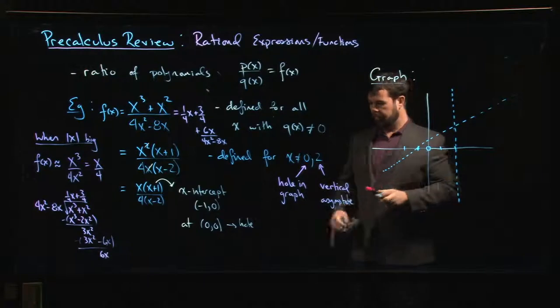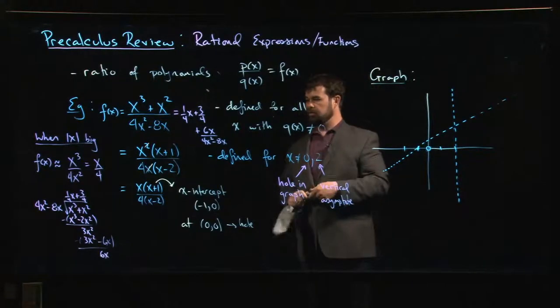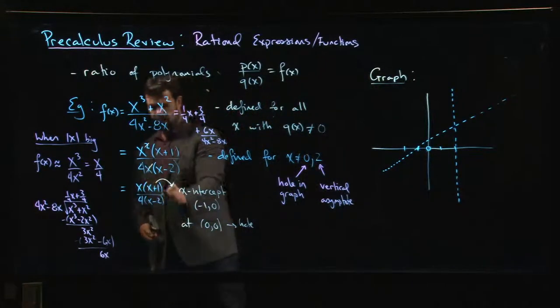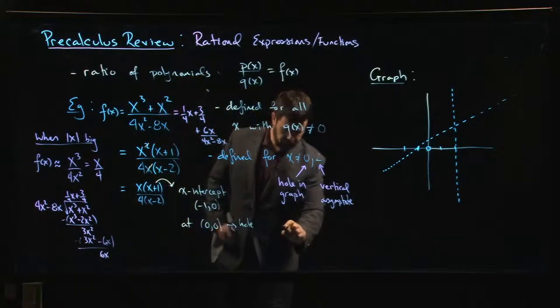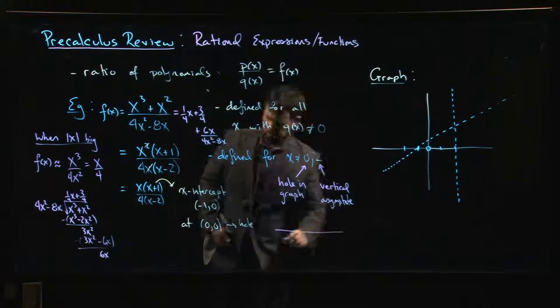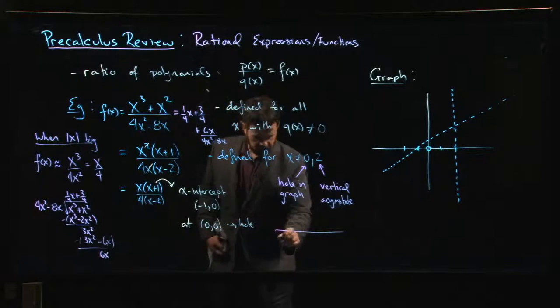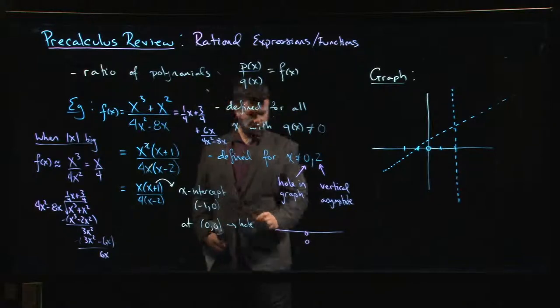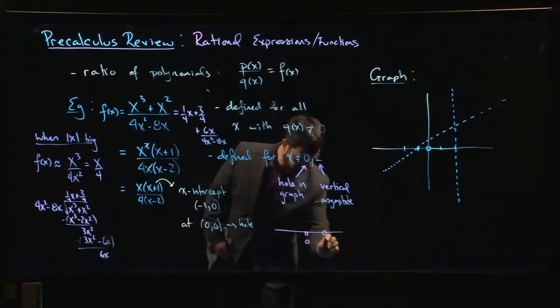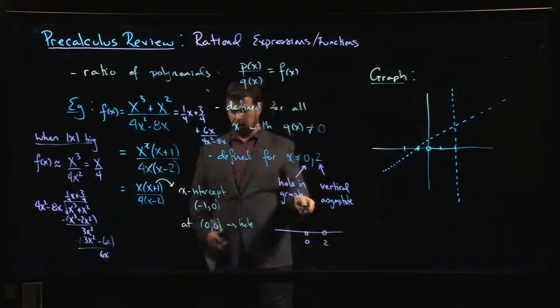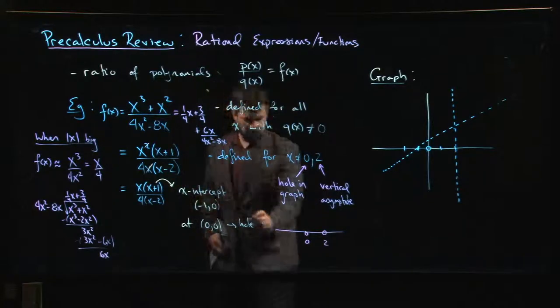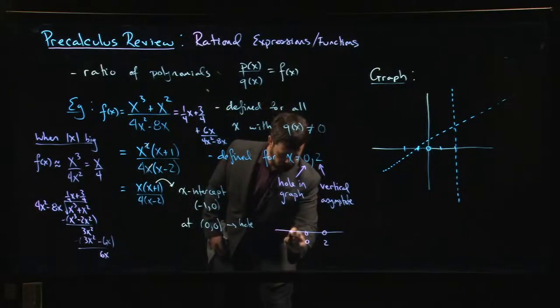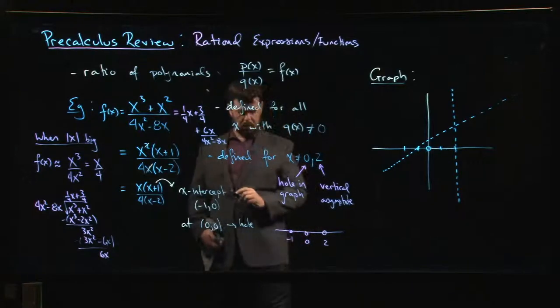Now what else can I do? Well one other thing that I can do is I can take this factored form here, I can look at a sign diagram. Okay so I know that my function was undefined at zero, I know that it's undefined at two, I like to put hollow circles where it's undefined, and I know that it's equal to zero at minus one.